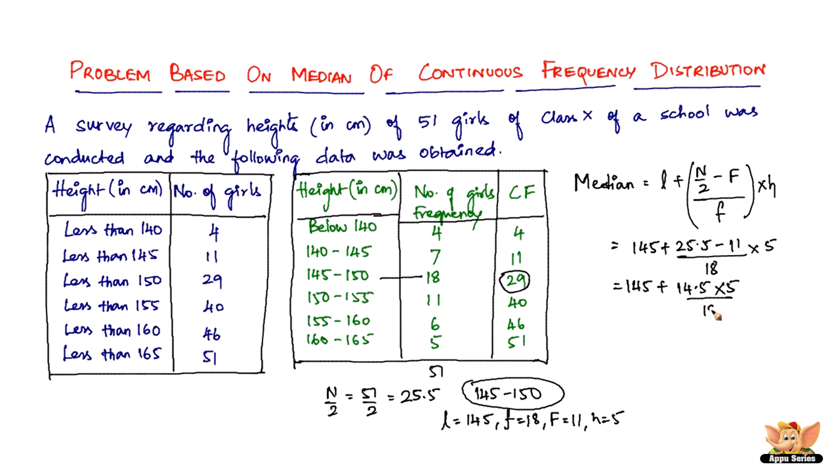Solving this we get 149.03, so this is nothing but the height, right? The median height of the girls. So it is 149.03 centimeters. Therefore the median height of the 51 girls in class 10 is found to be 149.03 centimeters.